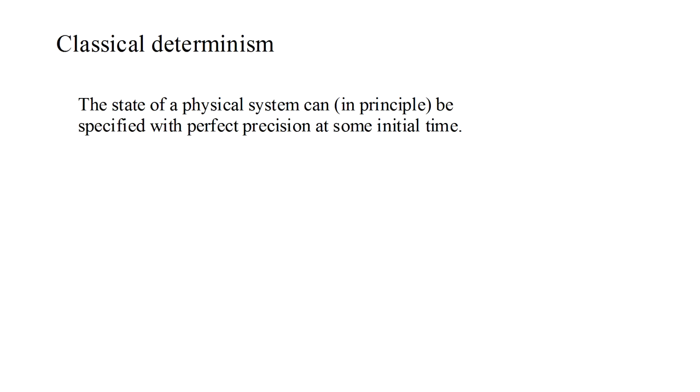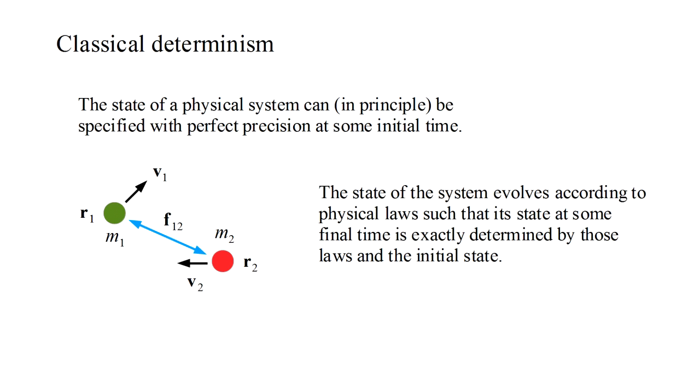The state of a physical system can, at least in principle, be specified with perfect precision at some initial time. For instance, we assume that at a given time, particle one has an exact mass, location, and velocity. Likewise, particle two, and so on. Then the state of the system evolves according to physical laws, such as the law of gravity, such that its state at some final time is exactly determined by those laws and the initial state. The precision of the mathematical description of this process requires that the same initial state will always produce the same final state.